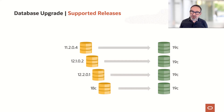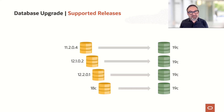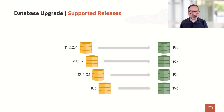If you intend to migrate with Data Pump, with transportable tablespaces, another technique, unload your data or whatever, you don't care. But if you do the database upgrade, as we would like to show you today, then you have to be at least on 11.2.0.4. You can be on 12.1.0.2, on 12.2.0.1, or on 18c, and then you can go directly to 19c.